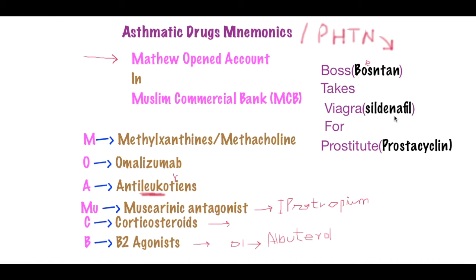'Prostitute' stands for prostacyclin analogs. Prostacyclin makes you relax — it causes vasodilation as well. With this mnemonic, if we know what the words imply, we can remember the mechanism of the drugs too.